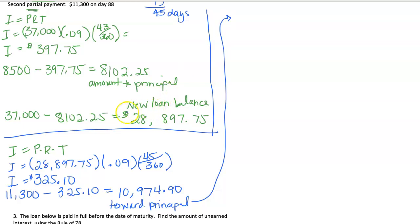So our old principal was $28,897.75. And then we're able to reduce that by $10,974.90. So our new principal or our new balance is $17,922.85. And now we have to finish the loan to the end.